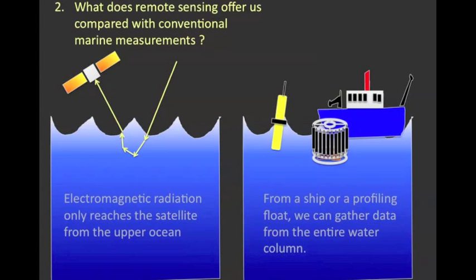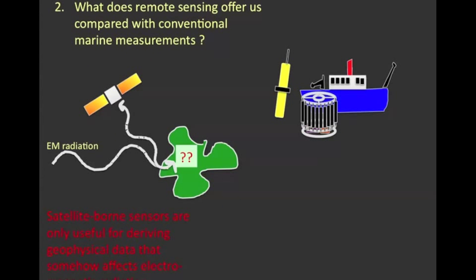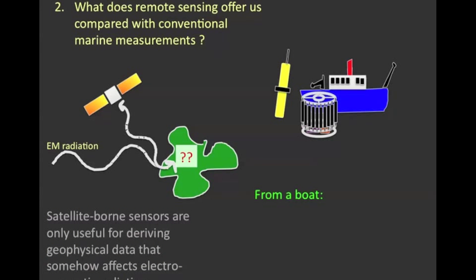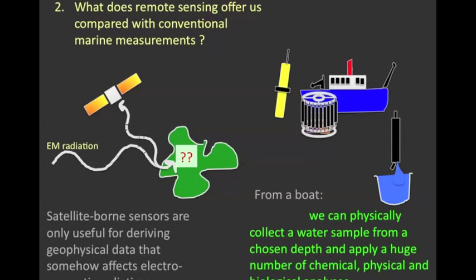Another important thing is to consider what we can actually measure from these different bases. So satellite-borne sensors are only useful for deriving parameters that are in some way interacting with electromagnetic radiation and changing the electromagnetic radiation detectably. From a boat, we can actually take a water sample. So we take a CTD rosette usually, with Niskin bottles on it, and we can choose the depth at which those Niskin bottles are taking a sample. Once we have a physical sample of the water in hand, we can do a huge range of analyses on it, be they chemical, physical or biological.